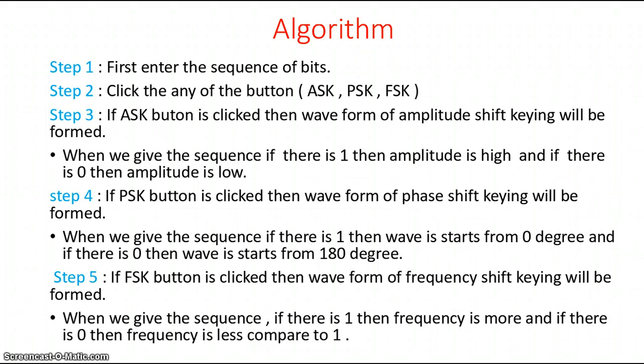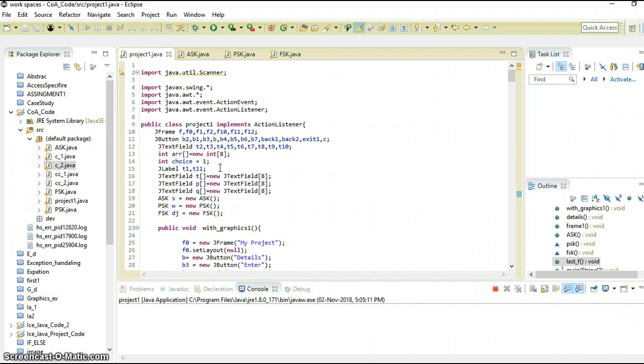Step 5: if FSK button is clicked then waveform of frequency shift keying will be formed. When we give the sequence, if there is 1 then frequency is more and if there is 0 then frequency is less. Now come to the project, let's run this.